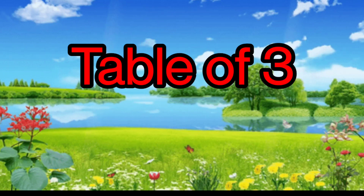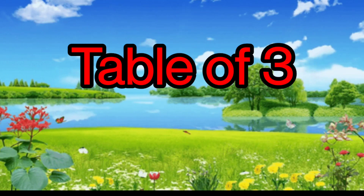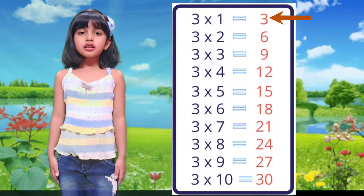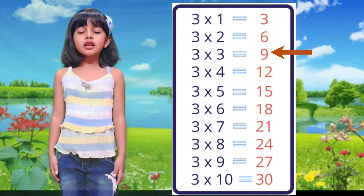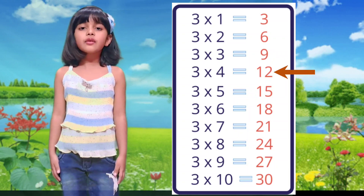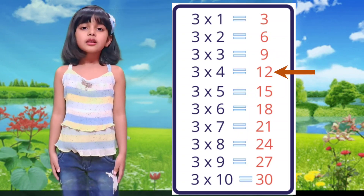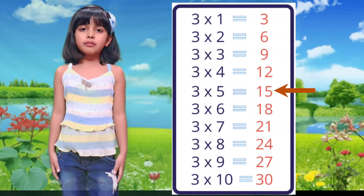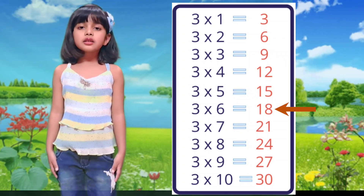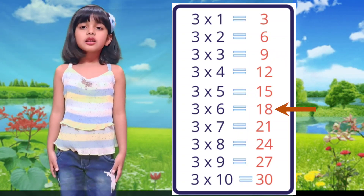Table of 3. 3×1 is 3, 3×2 is 6, 3×3 is 9, 3×4 is 12, 3×5 is 15, 3×6 is 18.